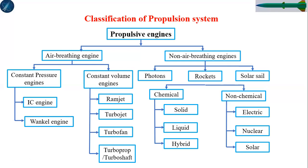Solid propellant systems are called solid rocket motors — note that solid engines are called motors. Liquid engines are called engines. For solid propellant systems, we call them rocket motors, but for liquid propellant systems, we call them liquid propellant engines. In the hybrid case, we also use the term engine.